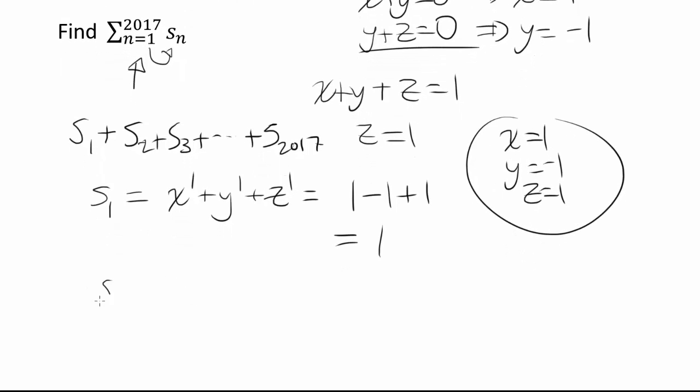How about S sub 2? That's x squared plus y squared plus z squared. And when you square 1 or negative 1, you're going to get 1. So adding them up should get you a 3.